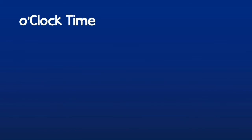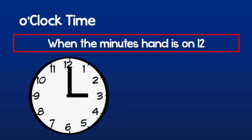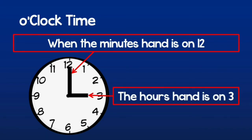As we already said, o'clock time happens when the minutes arm is on 12. This is an example of an o'clock time. I will look at the hours hand and I will see that the hours are 3. So this means that the time is 3 o'clock.